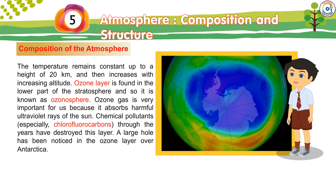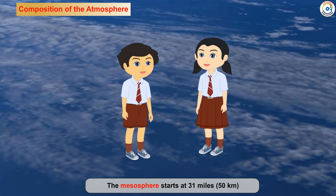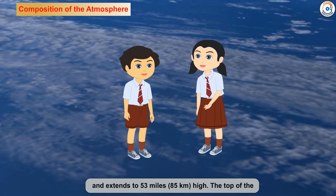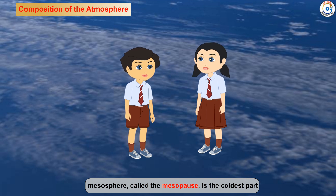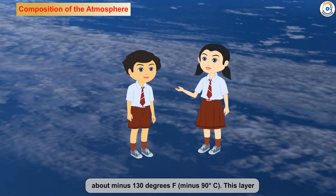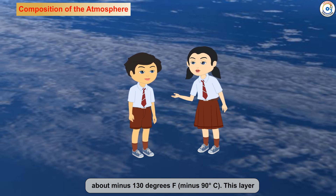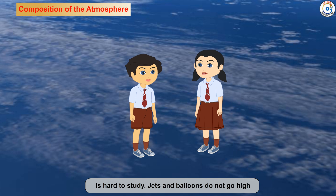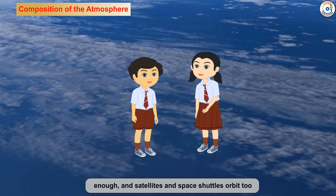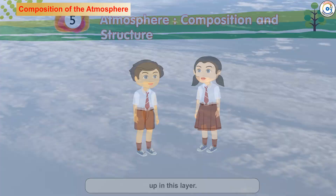A large hole has been noticed in the ozone layer over Antarctica. The mesosphere starts at 31 miles (50 kilometers) and extends to 53 miles (85 kilometers) high. The top of the mesosphere, called the mesopause, is the coldest part of Earth's atmosphere, with temperatures averaging about minus 130 degrees Fahrenheit (minus 90 degrees Celsius). This layer is hard to study — jets and balloons do not go high enough, and satellites and space shuttles orbit too high. Scientists do know that meteors burn up in this layer.